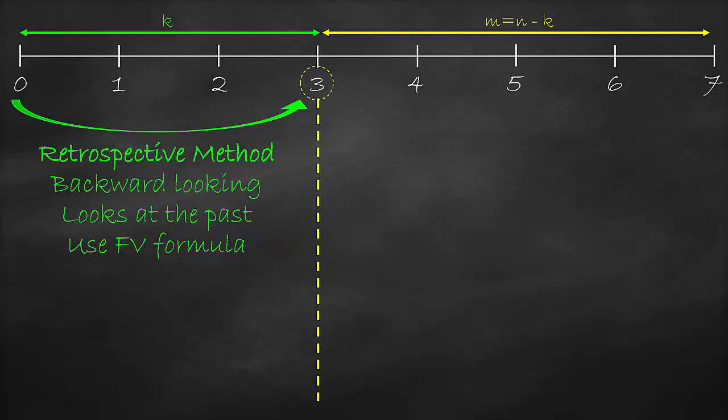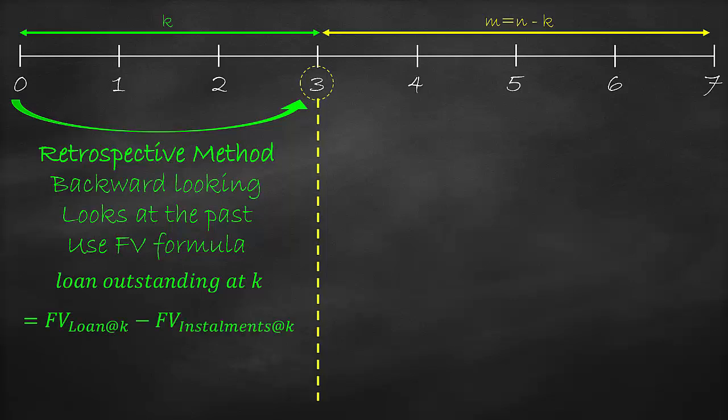The retrospective method formula is the future value of the loan minus the future value of the paid installments. We want to know the value of the loan in the future at the end of year 3, so we use the future value of a single cash flow because we get the loan once. Then we need to calculate and subtract the future value of the paid installments, so we use the future value of the ordinary annuity because we paid periodic installments.